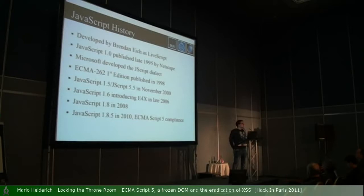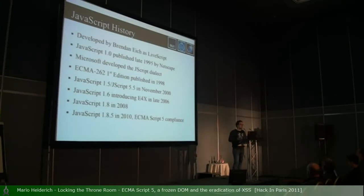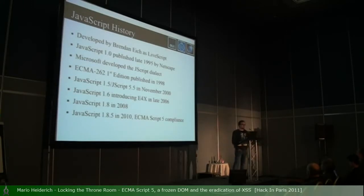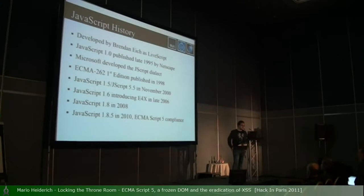It's called E4X. This is the most horrible thing you can ever imagine happening in JavaScript because it glues together XML and JavaScript — you have native XML support in JavaScript. You can just take any XML object, put it in the JavaScript engine, and it'll parse without yielding any errors. E4X is a horrible thing and definitely worth its own talk — you're going to like it if you like XSS and haven't heard about it.